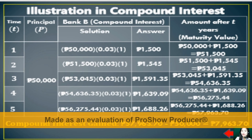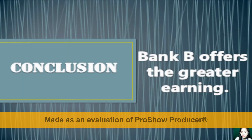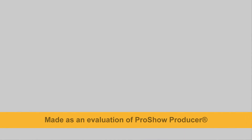Comparing the interest gained from Bank A and Bank B, the conclusion is that Bank B offers greater earnings, because the interest gained in Bank B is more than the interest gained in Bank A.